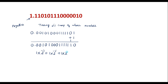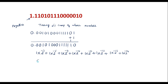Continuing: 1 into 2 power minus 9, plus 1 into 2 power minus 10, plus 1 into 2 power minus 11, plus 1 into 2 power minus 12, plus 1 into 2 power minus 13, plus 1 into 2 power minus 14. Simplifying all these terms gives approximately 0.160093. Since the original number was negative, the decimal equivalent is minus 0.160093. Thank you for watching.